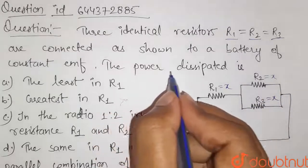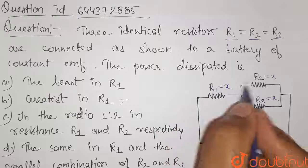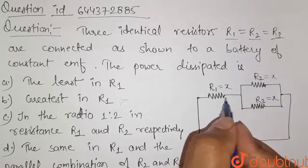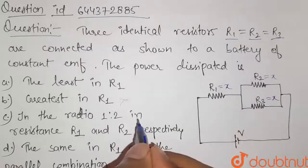Now we have to find the power dissipated in R1, R2, and R3 and compare them according to the options given here.